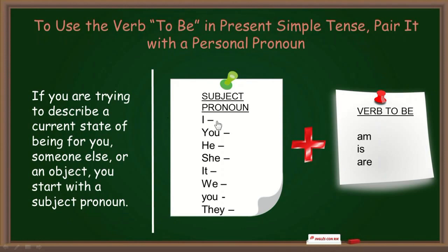Primera persona singular: I — yo. Segunda persona singular: you — tú. Tercera persona singular: he — él; she — ella; it. Este pronombre no lo tenemos en español, pero se utiliza en inglés para animales, cosas o países. Primera persona plural: we — nosotros. Segunda persona plural: you — ustedes. Tercera persona plural: they — ellos. Y luego tenemos el verbo to be en sus tres formas: am, is, are.